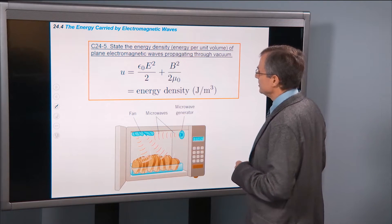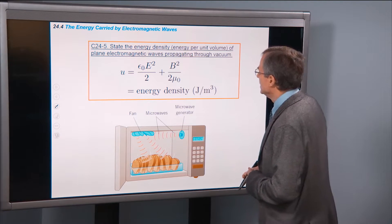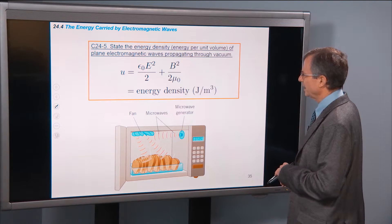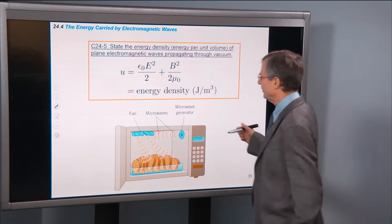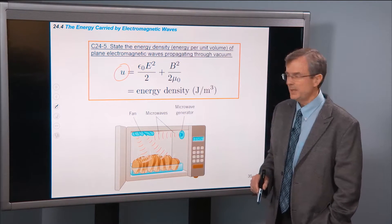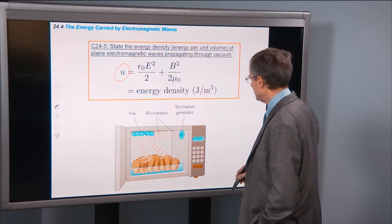All right. So, I promised you equations, and I'm making good on that promise. State the energy density, energy per unit volume of plane electromagnetic waves propagating through vacuum. This is it. This is an energy, we use a lowercase u to denote the energy per unit volume. It's called energy density.